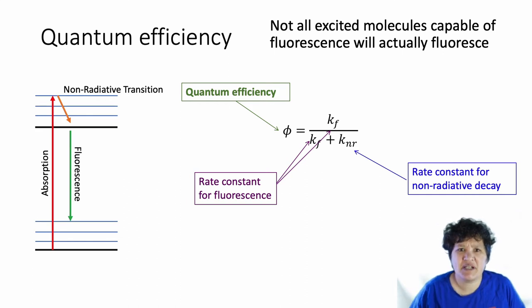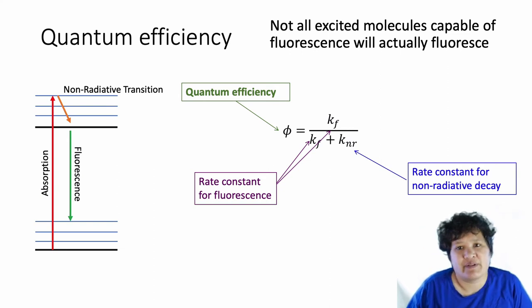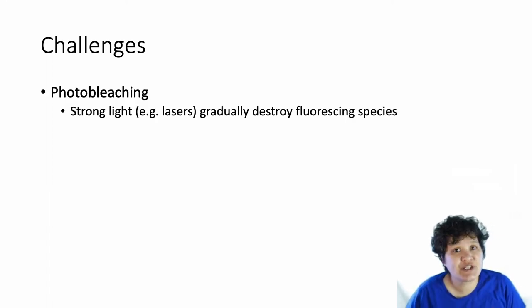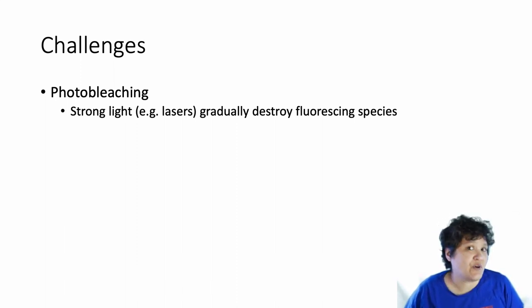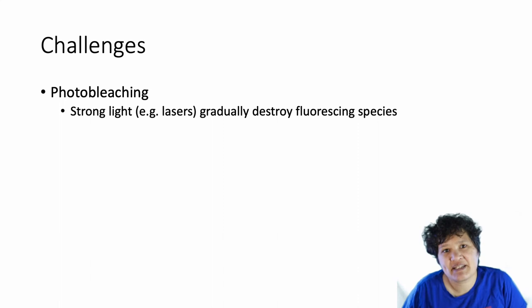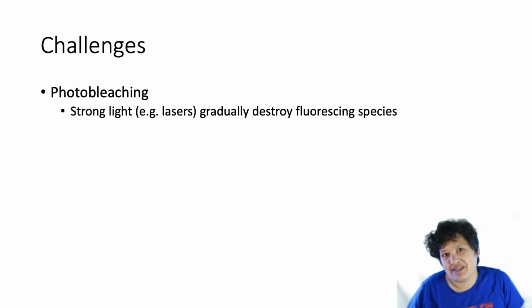There are issues with fluorescent spectrometry. The first is photobleaching — fluorescent molecules tend to be very sensitive to light, so as you expose them to light, those fluorescent species are going to be destroyed. You can't just keep your sample in the dark, because the actual act of measuring fluorescence is putting light through your sample. So the longer you measure, the lower your quantum efficiency is going to be. Photobleaching basically means your yields over time are going to go down.